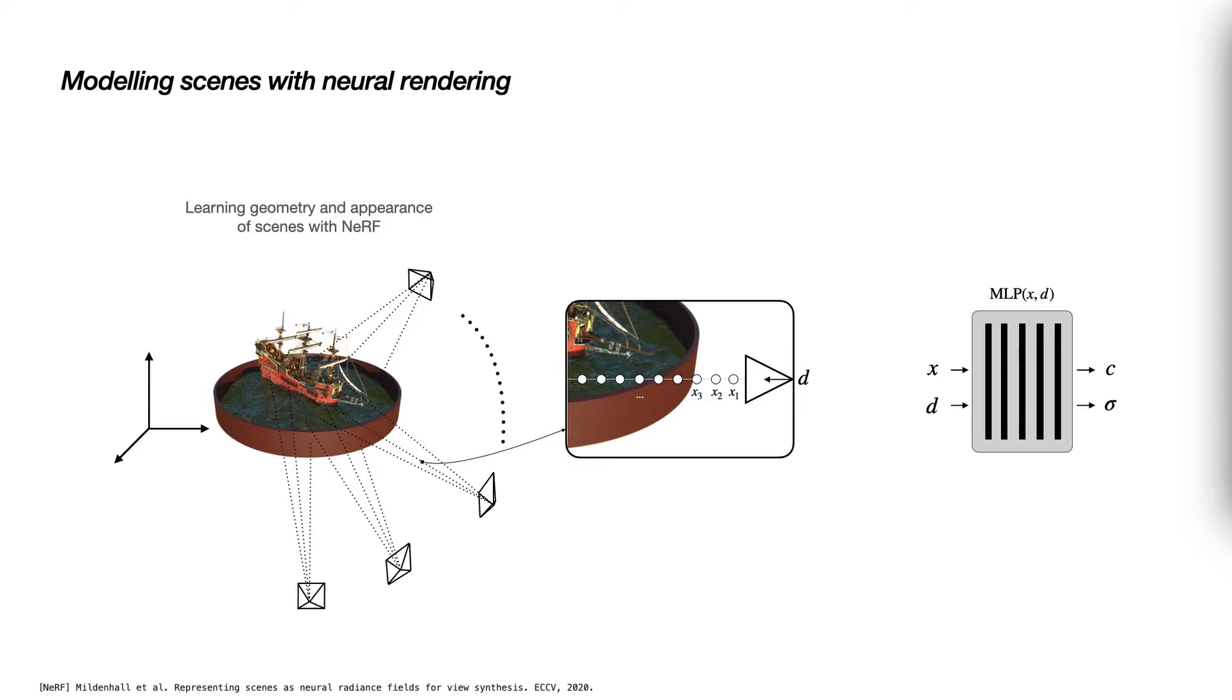Now we can apply volume rendering to render a color C hat, which should correspond to the actual color of the ground truth pixel color of the ray. For that, we have to adjust the colors and densities of the MLP. We do this by minimizing the mean squared error between the rendered color and the ground truth color for each ray. This will result in a change of colors and densities produced by the MLP and in turn, the rendered pixel colors will become more similar to the pixel colors of the input images.